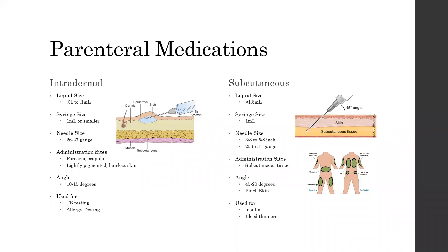Intradermal injection goes in between the epidermis and the dermis. It uses a liquid volume of 0.01 to 0.1 mL, a syringe of 1 mL or smaller, and a needle of 26 to 27 gauge. Find a site on the forearm or scapula that is lightly pigmented and hairless. Clean with an alcohol swab, then insert the needle at a 10 to 15 degree angle with the bevel up — the bevel is the hole in the needle. Inject the medication; if done correctly, you should see a small bubble called a bleb on the skin. Intradermal injections are commonly used for TB and allergy testing.